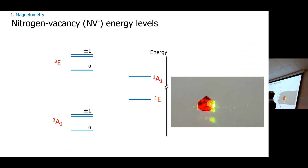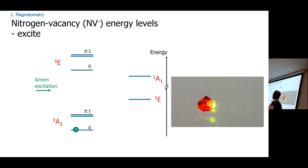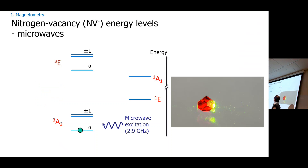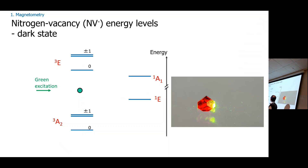We can understand what's going on from the energy levels. It's an electron spin-one system with three energy levels in the ground state. At room temperature it can be in any of these states because the energy gap is only about 3 GHz. When we send in green light, it excites from spin zero to spin zero and decays back emitting red fluorescence — one photon of red, which we detect. But if we flip the spin state with microwaves and go again, something different happens.